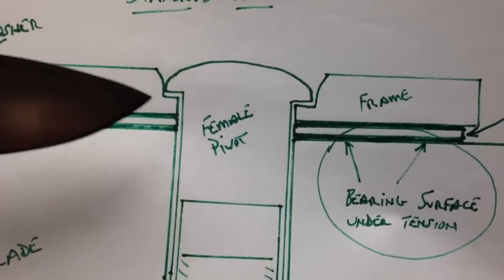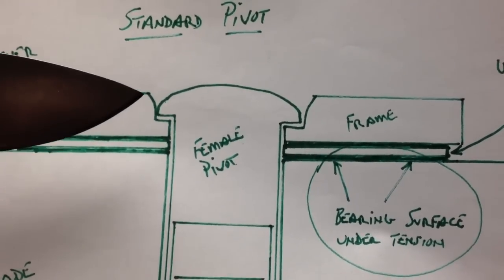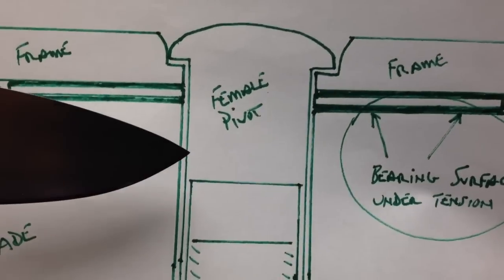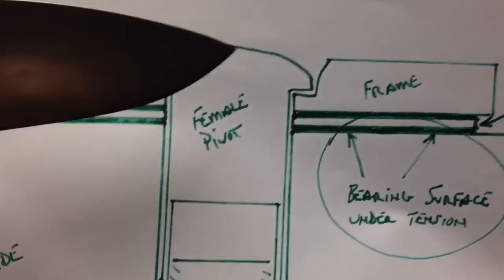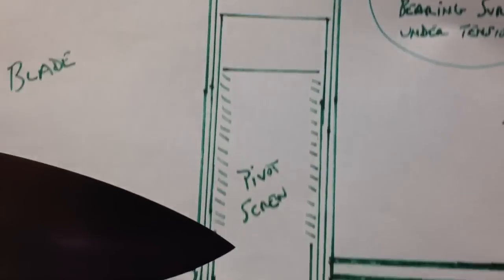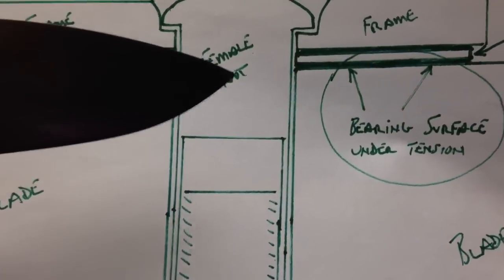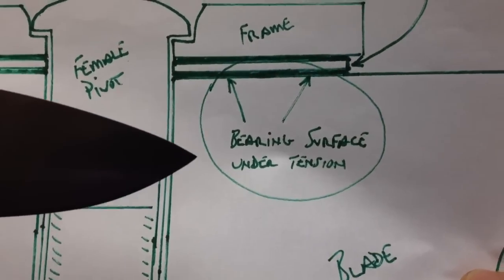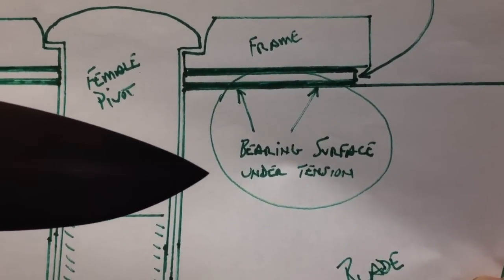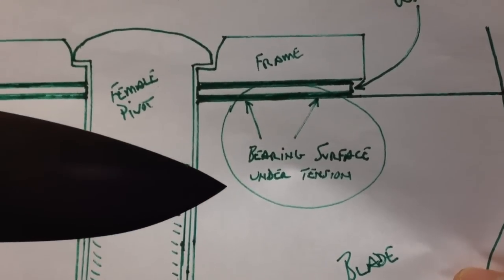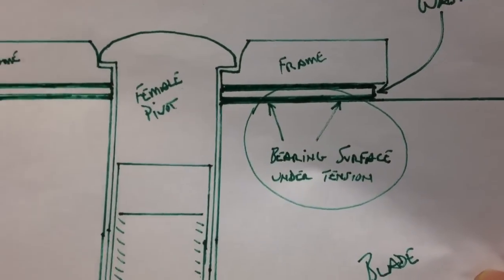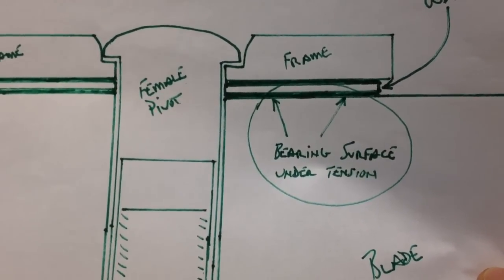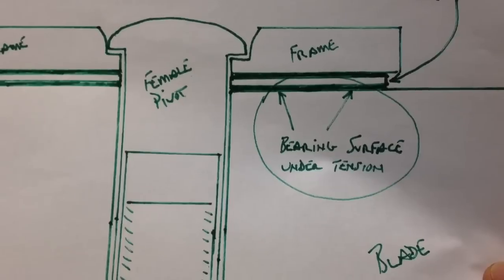And the way that tension is applied and adjusted on the knife blade is by tightening the pivot screw into the female pivot to a level of tension that gives the user the desired amount of resistance or play in the blade.